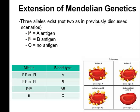If you have type A blood, you have just the A antigen on your red blood cells. If you have type B blood, you have the B antigen. If you have type AB blood, you have both the A and B antigens. And if you have type O blood, you have neither the A nor the B antigen. The A gene codes for the A antigen, the B gene codes for the B antigen, and the O allele codes for no antigen.